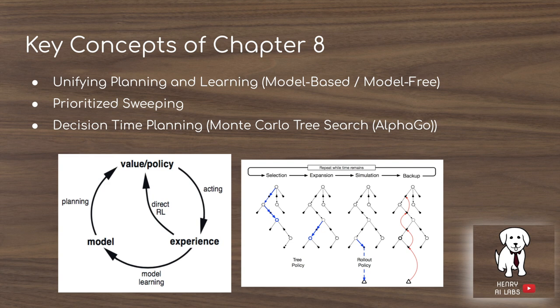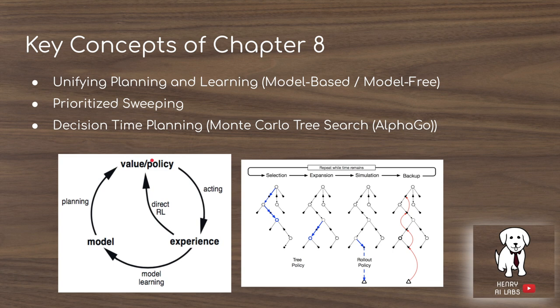This is the key idea behind model-based and model-free reinforcement learning. In chapters 3 and 4 we saw dynamic programming algorithms using a Markov decision process, where we have a model of the environment — meaning we know the transition probabilities of the next state and reward given the current state-action pairs. This contrasts with model-free learning that learns solely through trial and error, like Monte Carlo or temporal difference learning. Here we unify planning by using the model to simulate experience and update our value function and policy.